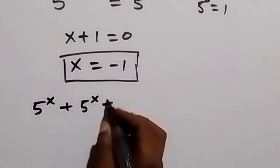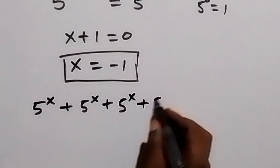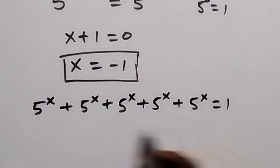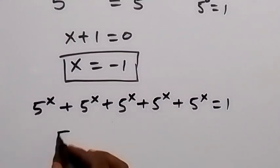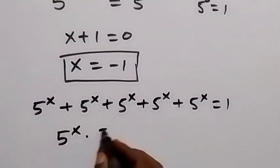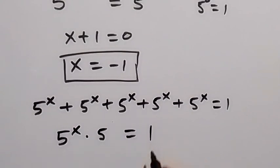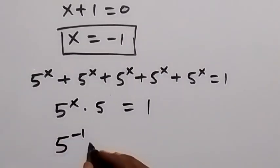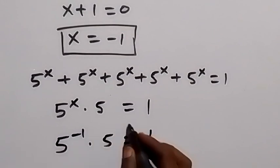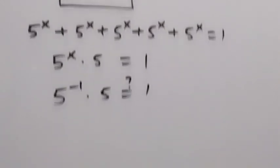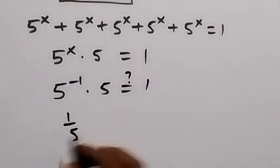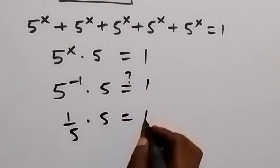To check: we have 5 raised to power x added up in 5 places, which equals to 1. So 5 raised to power x times 5 equals 1. Now let's put x equals minus 1: we have 5 raised to power minus 1, then times 5, is equal to 1. We can see that 5 raised to power minus 1 is 1 over 5, and 1 over 5 times 5 equals 1.